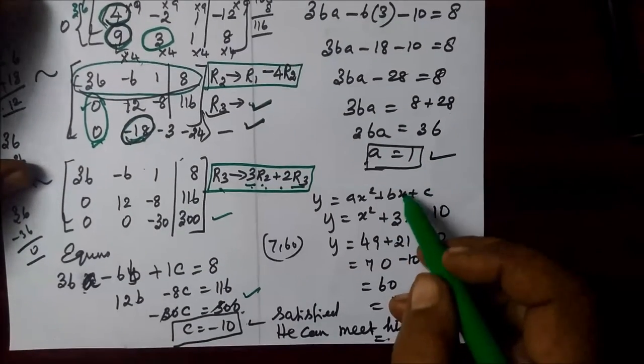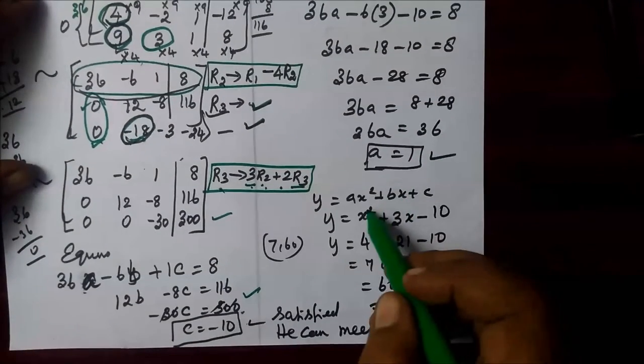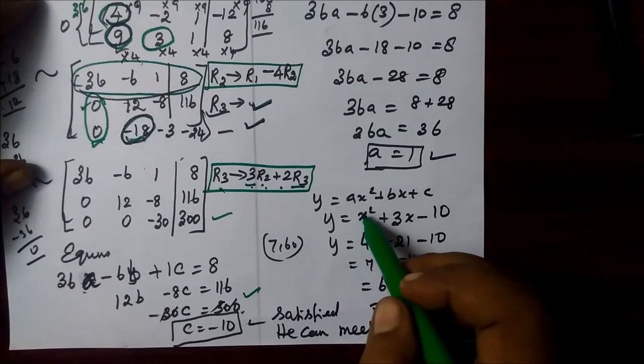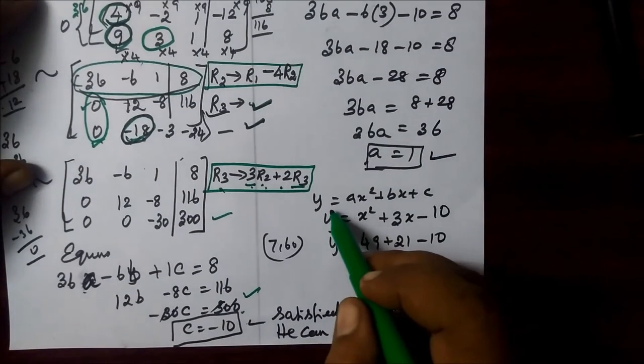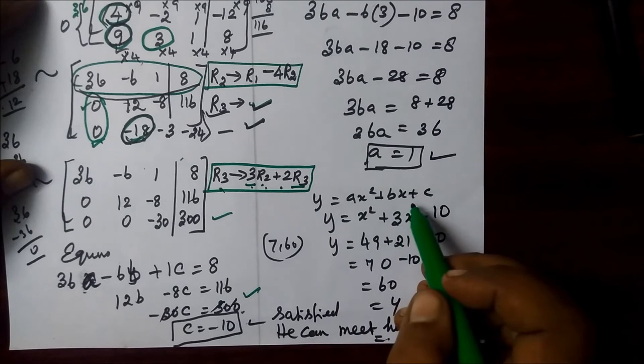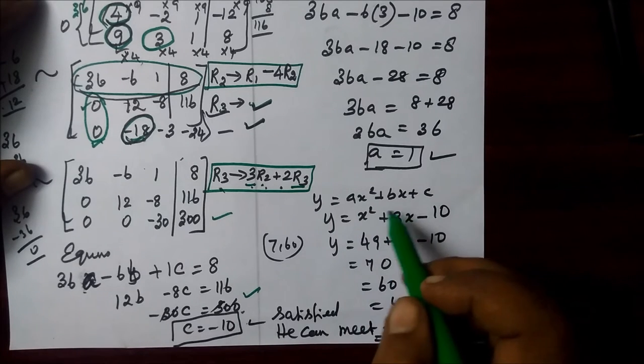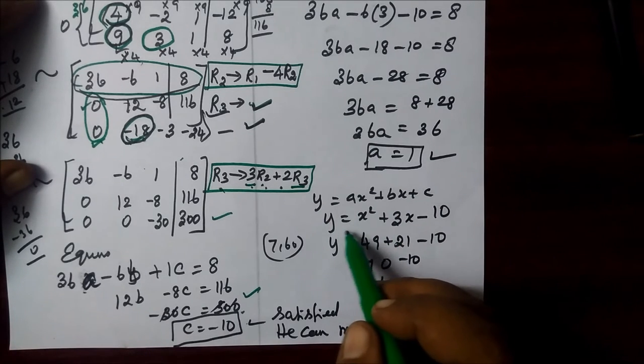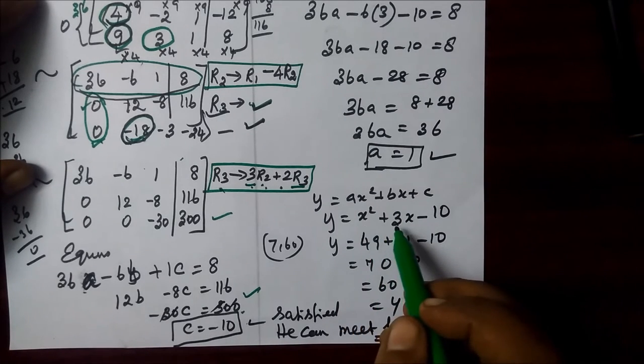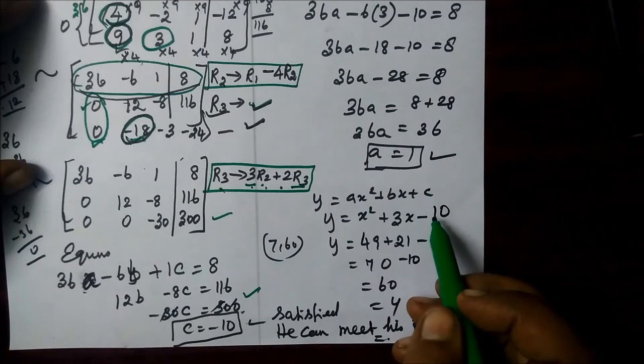A value is 0. Now A, B, C value is 0. You can substitute in this equation. Y is equal to x squared plus 3x minus 10.